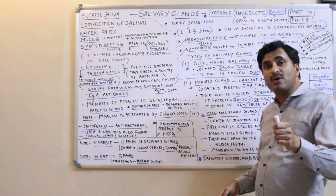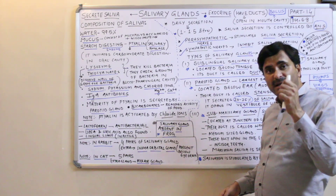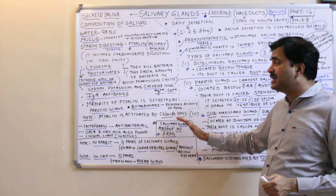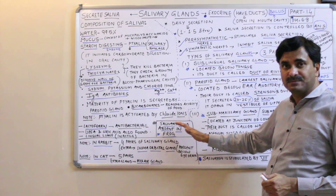Very importantly, in the frog — an amphibian — the salivary glands are totally absent.